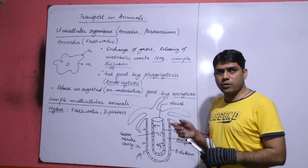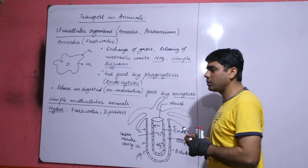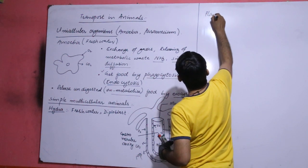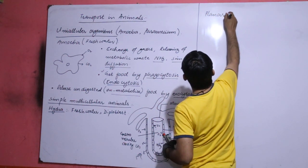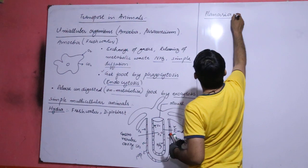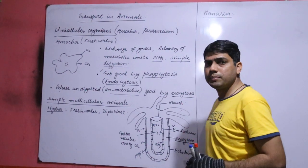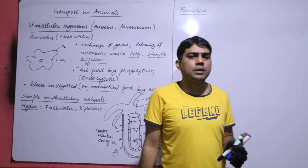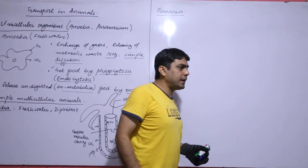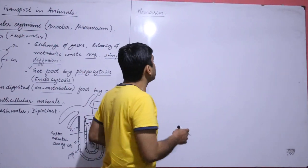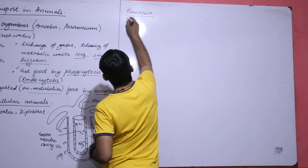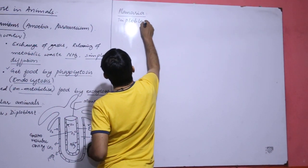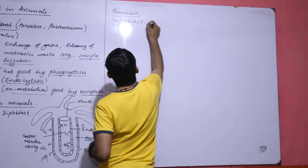Now we are going to discuss transport in planaria. Planaria is also a simple multicellular animal. Why we call it simple multicellular animal? Actually it is fresh water triploblast.